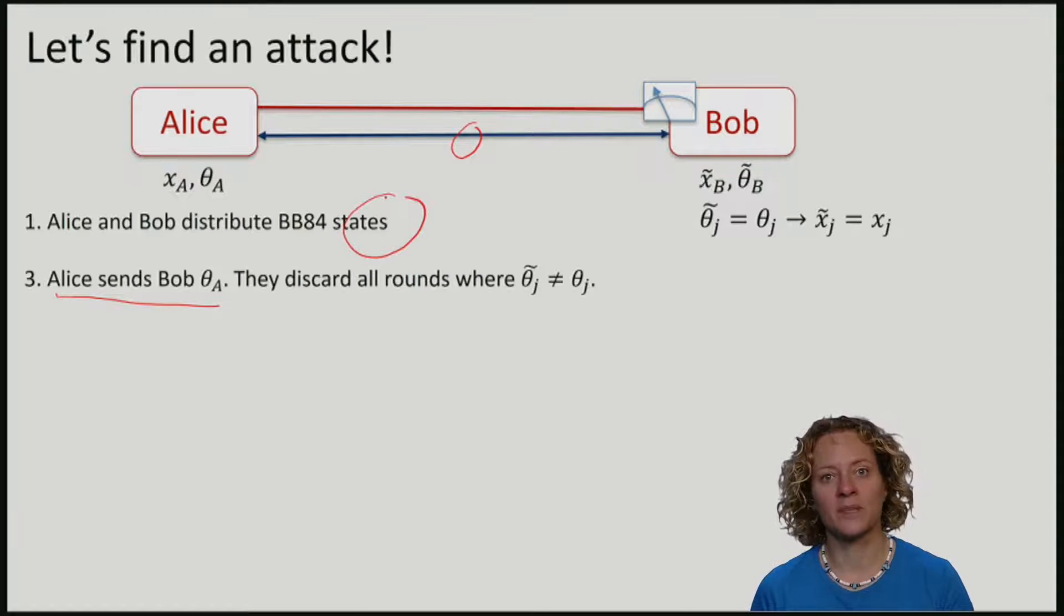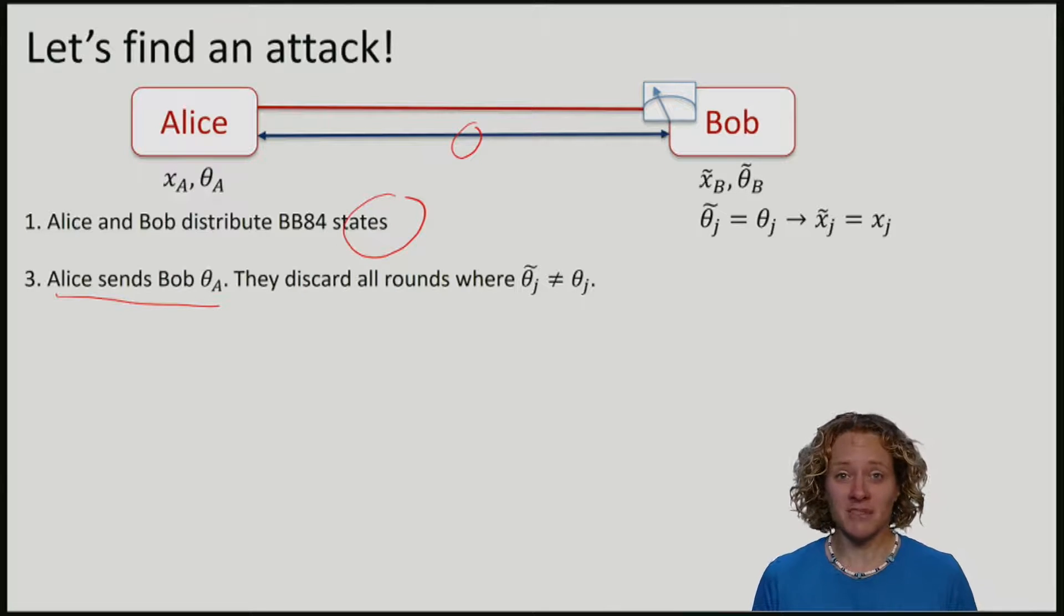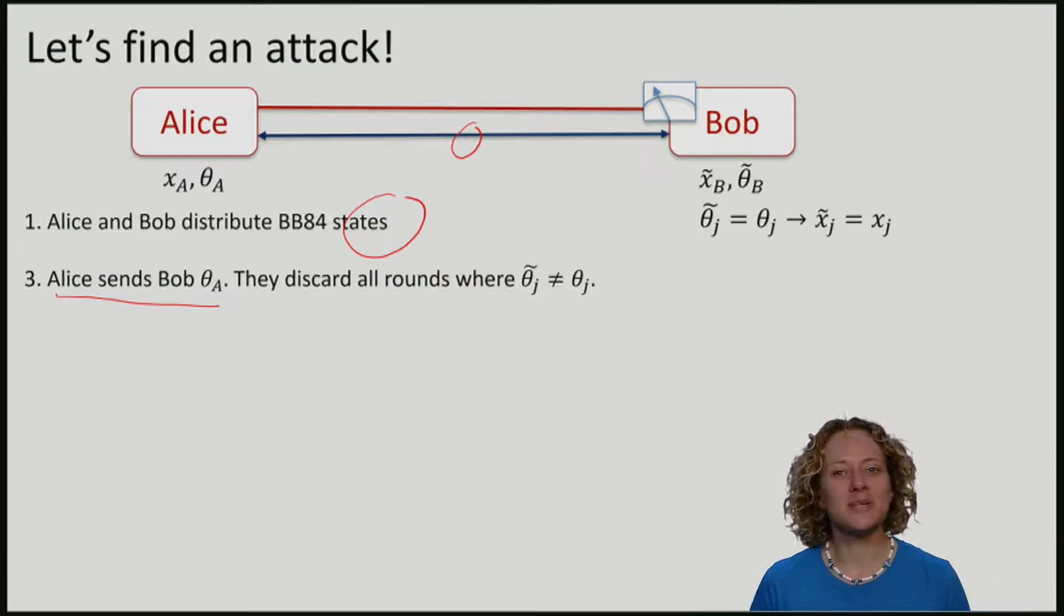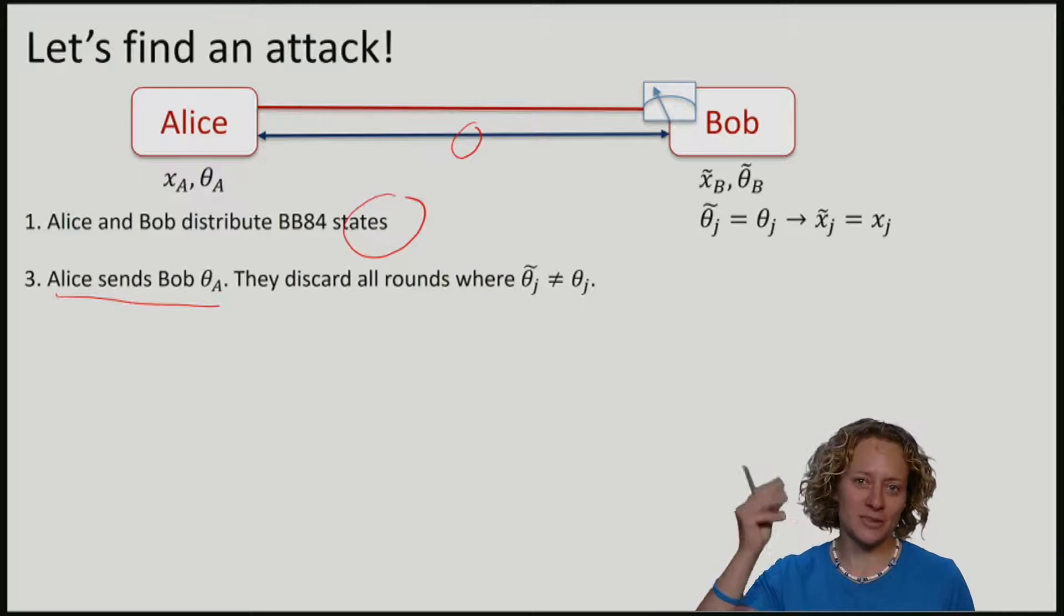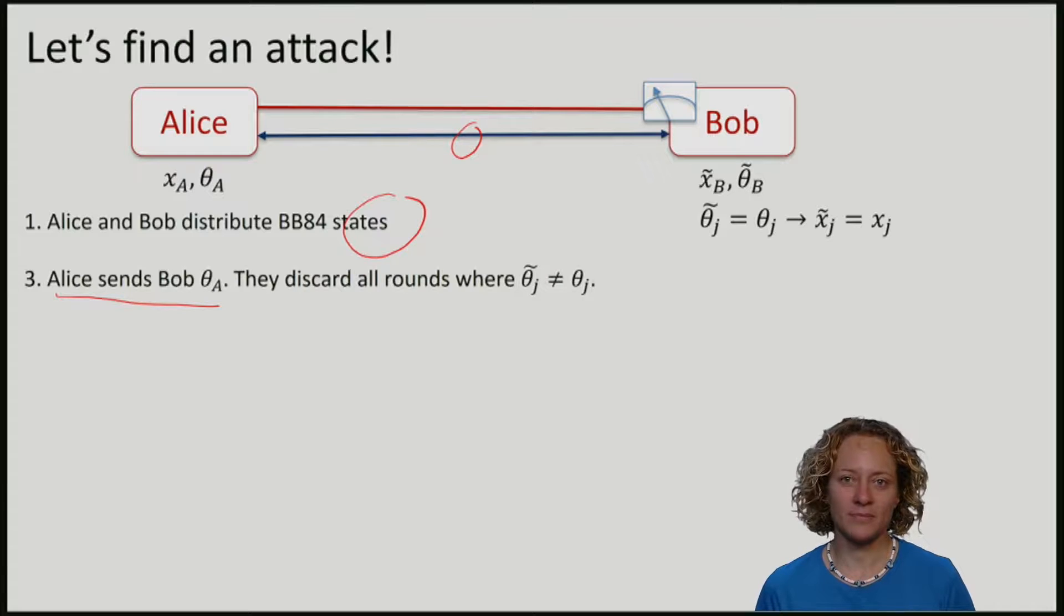In this step, now she is going to wait until Alice announces her basis string theta. She is going to measure all the qubits in exactly the correct basis, introducing very little noise, if any, and simply prepare the state again and send it to Bob. Now Eve has learned the entire string x. All of it.